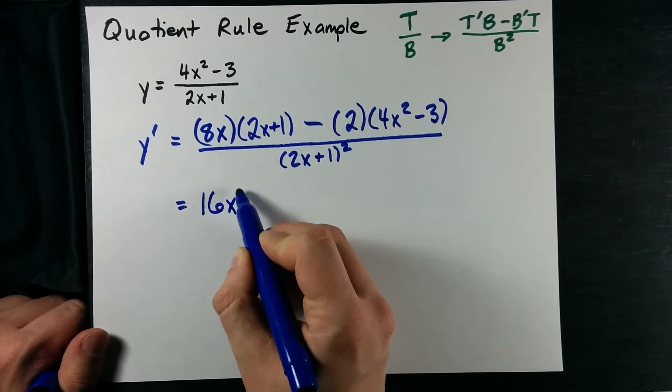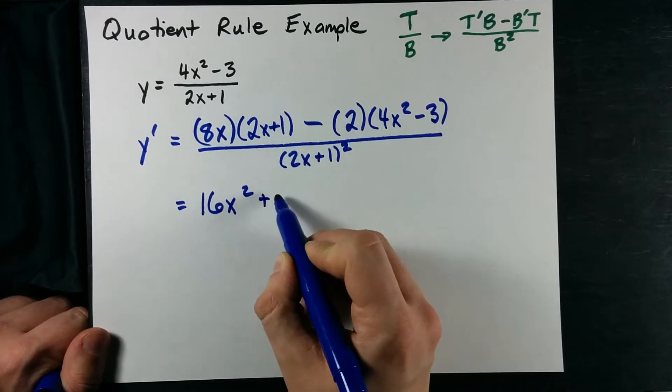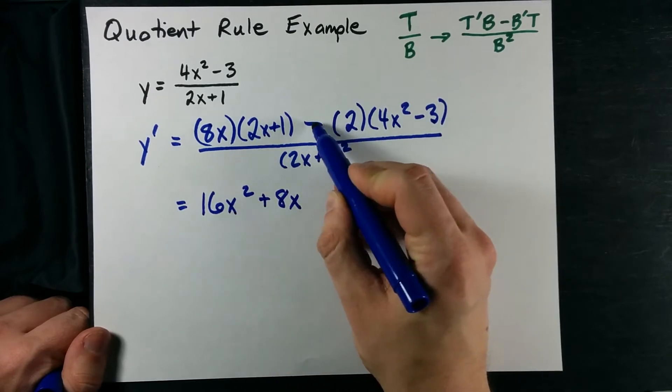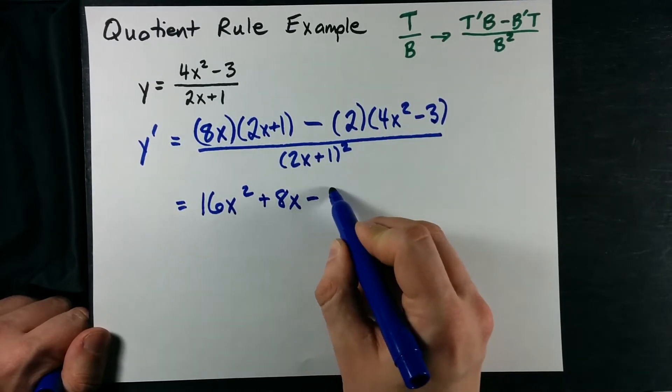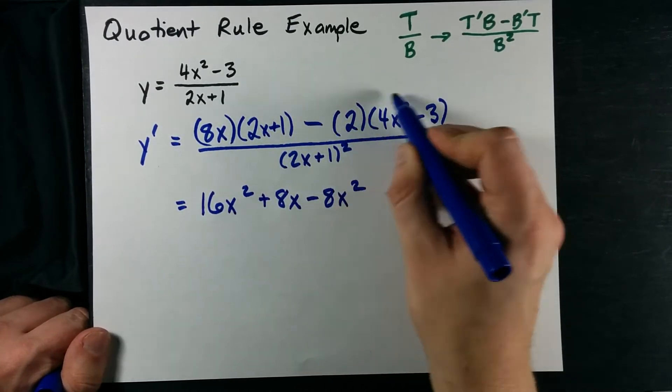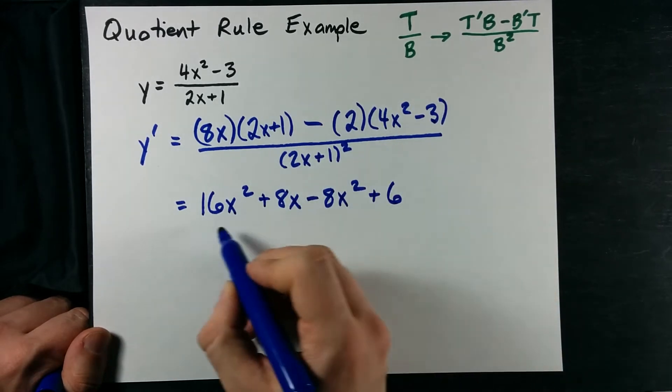So 16X squared, we multiply that there, plus 8X. Now we have minus 2 times that, which is minus 8X squared, and minus 2 times that, which is plus 6.